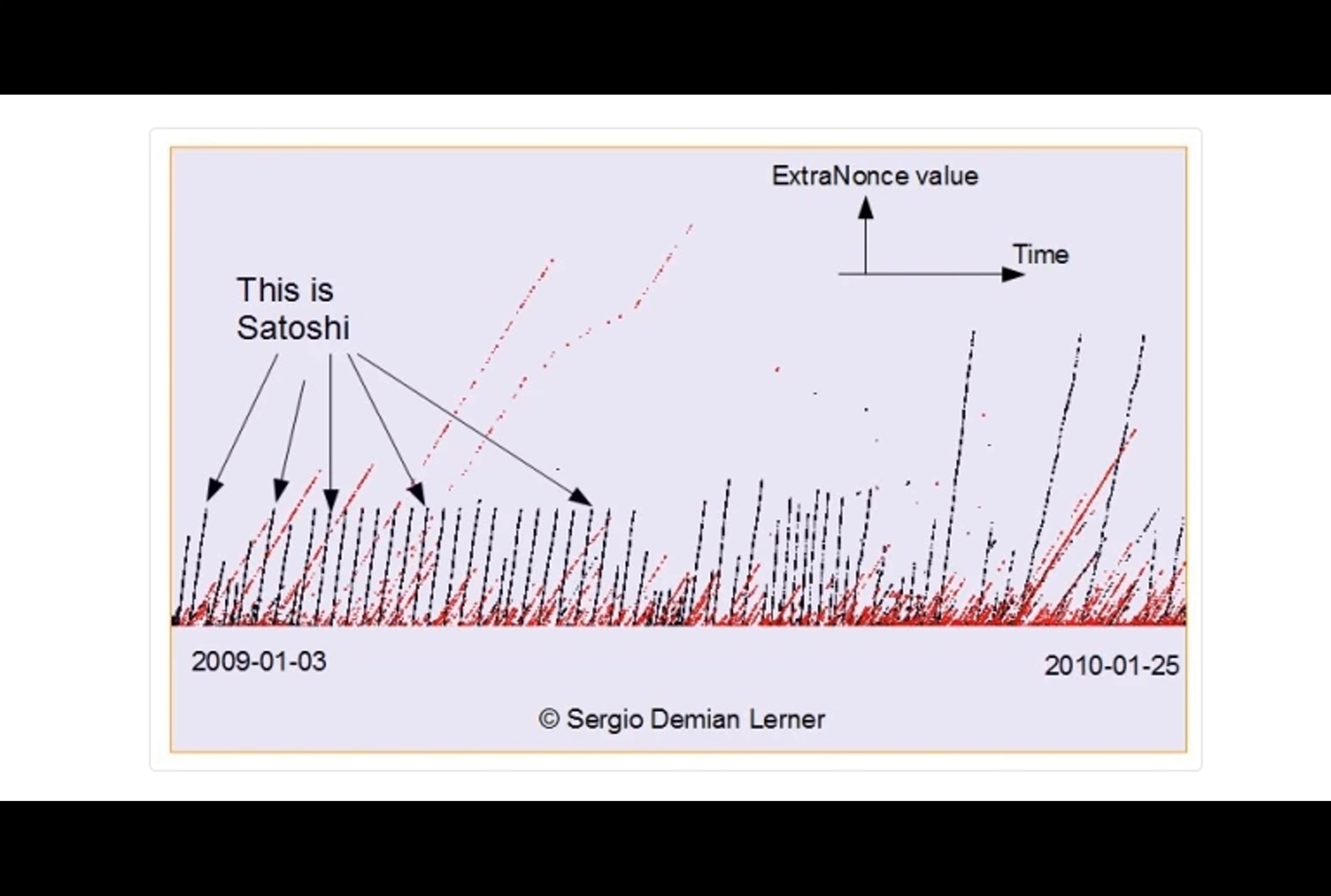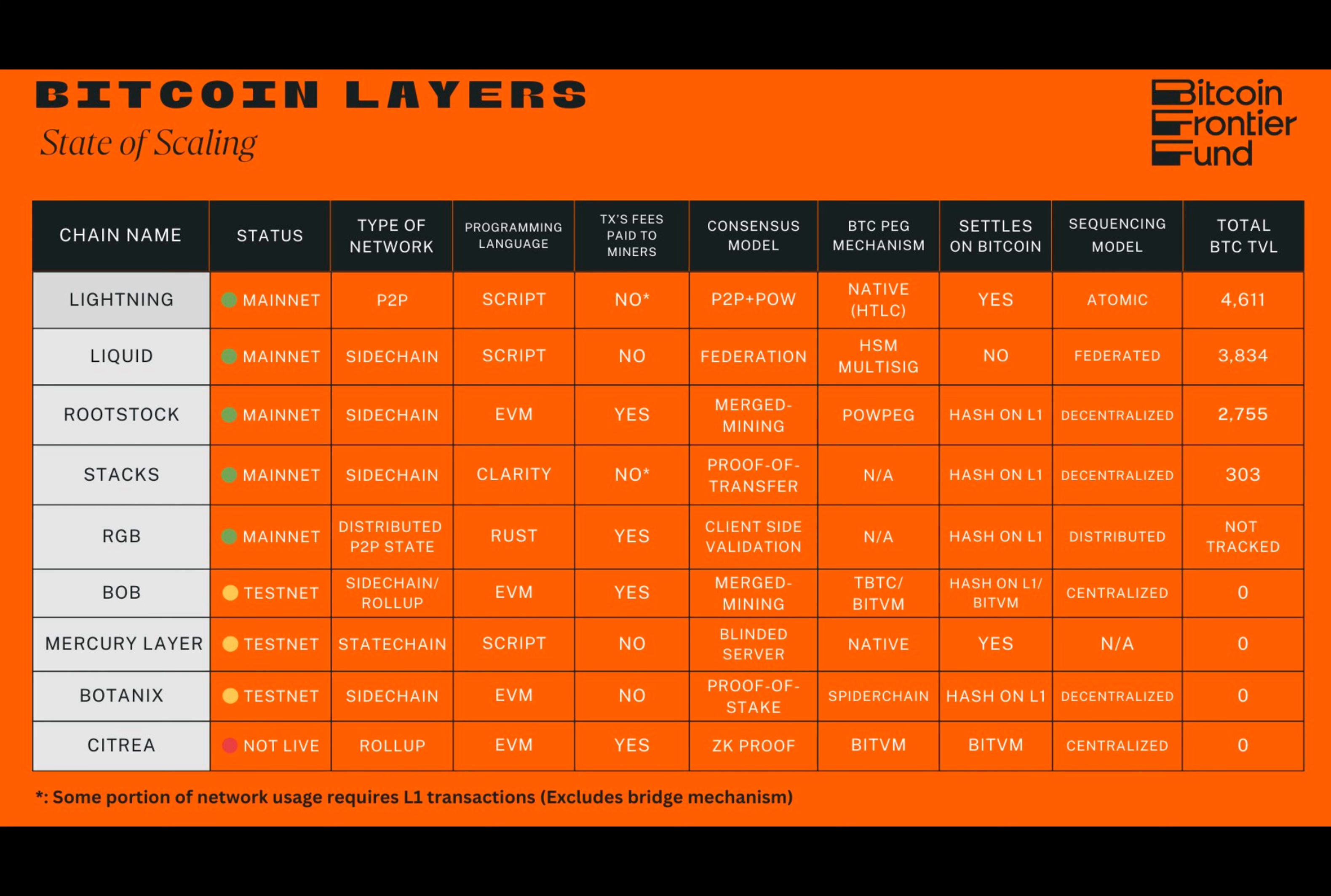Lerner briefly unpacked the paradigm of disputable computation. No computation is performed on-chain if all parties agree on the computation result. However, if a party disagrees, an on-chain interaction begins to solve the dispute formally and efficiently.